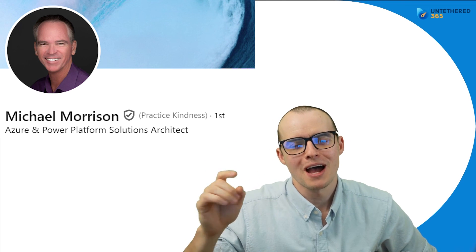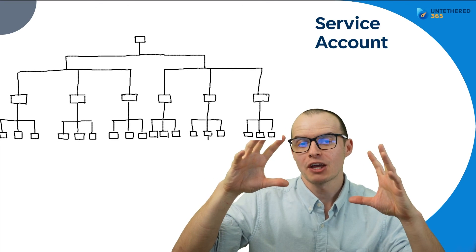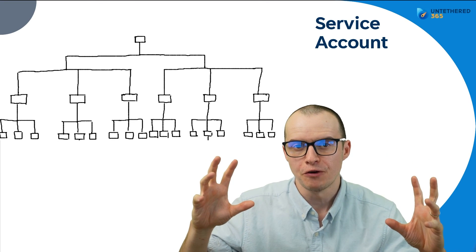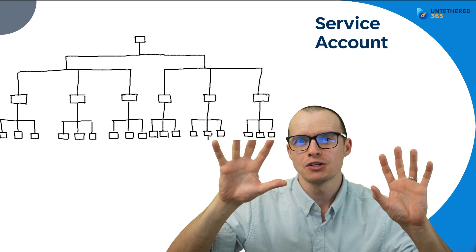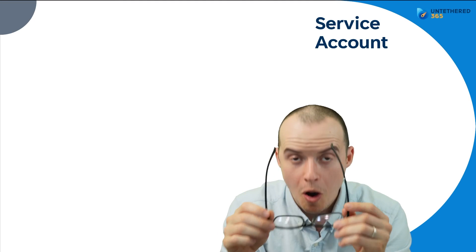We're so grateful to Michael Morrison for stopping by — be sure to follow him on LinkedIn. There's one more topic we didn't cover: service accounts, where one licensed account can run a bunch of Power Automate flows instead of licensing all users individually. That can be dangerous and lead to multiplexing, which we'll unpack in our next video.